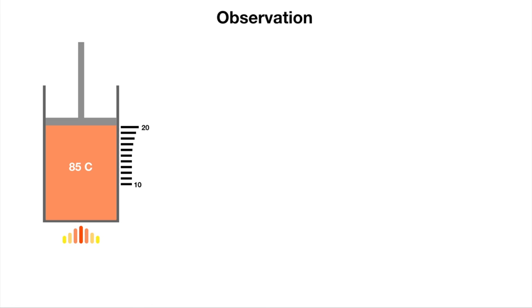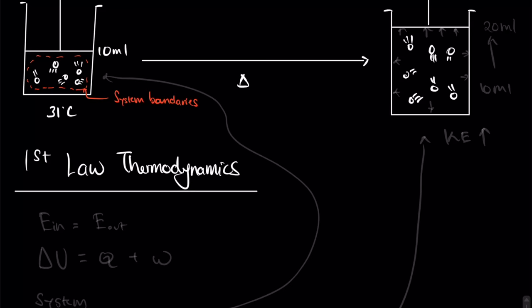This could be easily explained by the ideal gas law PV = nRT. To keep the pressure constant, as the temperature increases, the volume has to increase as well. But does it satisfy the first law of thermodynamics?